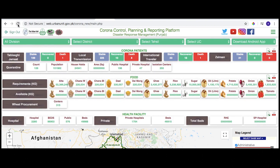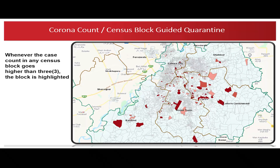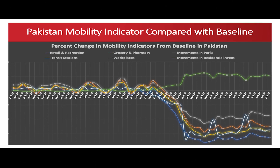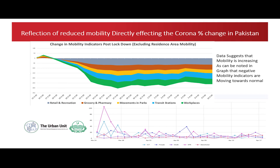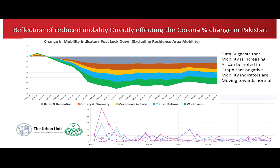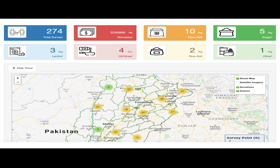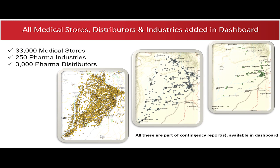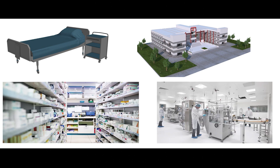The Urban Unit has created a Corona Control Planning and Reporting Platform for Disaster Response Management that effectively records Punjab-specific corona patient data, estimated information of quarantined population and households from province to UC-level details, food requirements and available stock data indicating geospatially food availability against its requirements, current health facilities available including bed counts, public and private hospitals, medical stores, pharma industries and distributors.